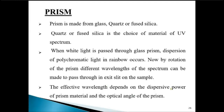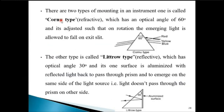The effective wavelength selected depends on the dispersive power of the prism material and the optical angle of the prism. There are two types of prisms used: the Cornu type and the Littrow type. The main difference is the angle at the top of the prism, called the prism angle or optical angle. In the Cornu type, electromagnetic radiation enters from one side and leaves from the other side. In the Littrow prism, one surface is aluminized to act as a mirror, so electromagnetic radiation enters and leaves the prism from the same face.